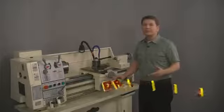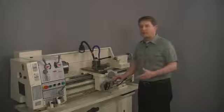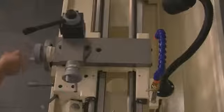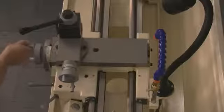To start we need to position the cross slide all the way to the front of the machine. Now notice that I'm moving the cross slide all the way until it hits the stop behind the cross slide hand wheel.